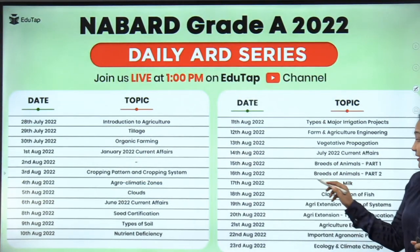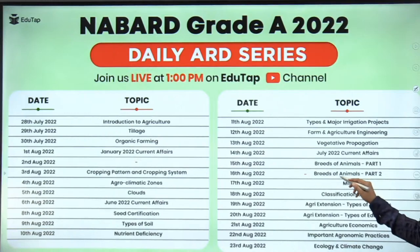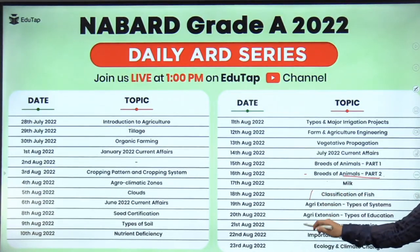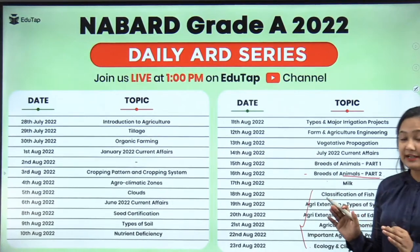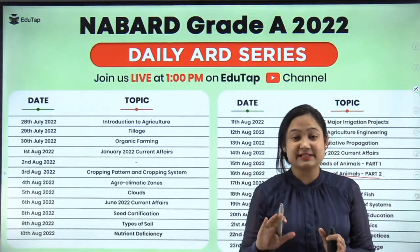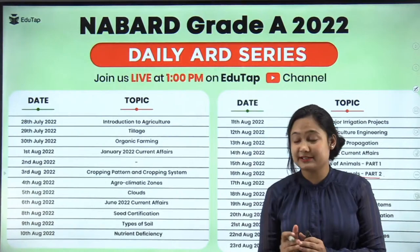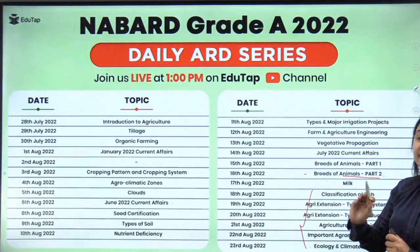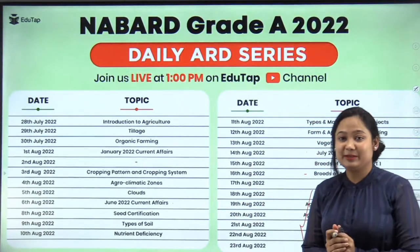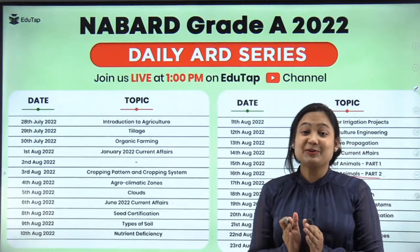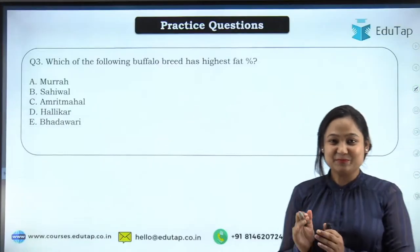Today we are on Part 2 of the breeds of animals. After that we'll talk about milk. Very few classes remain, so I hope you are revising all the classes and current affairs we have discussed. Do take time-to-time current affairs as you can see from the timetable. First of all, we will discuss the practice question as we always do.